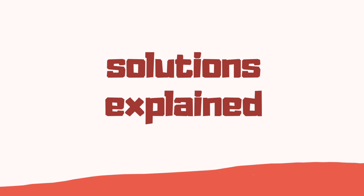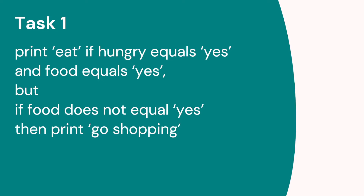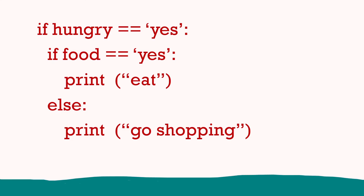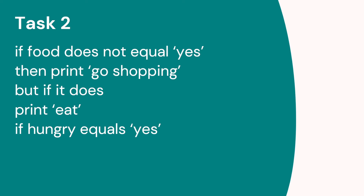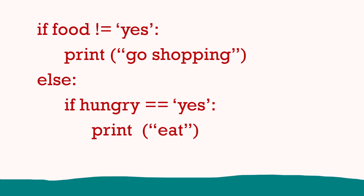When you've finished, let's have a look at the solutions. Task one: if hungry equals yes and food equals yes, print 'eat'; if food does not equal yes, print 'go shopping'. We have an if-else inside an if statement. Task two: if food does not equal yes, print 'go shopping', but if it does, then if hungry equals yes, print 'eat'. Here we have an if statement nested inside the else part of an if-else statement.